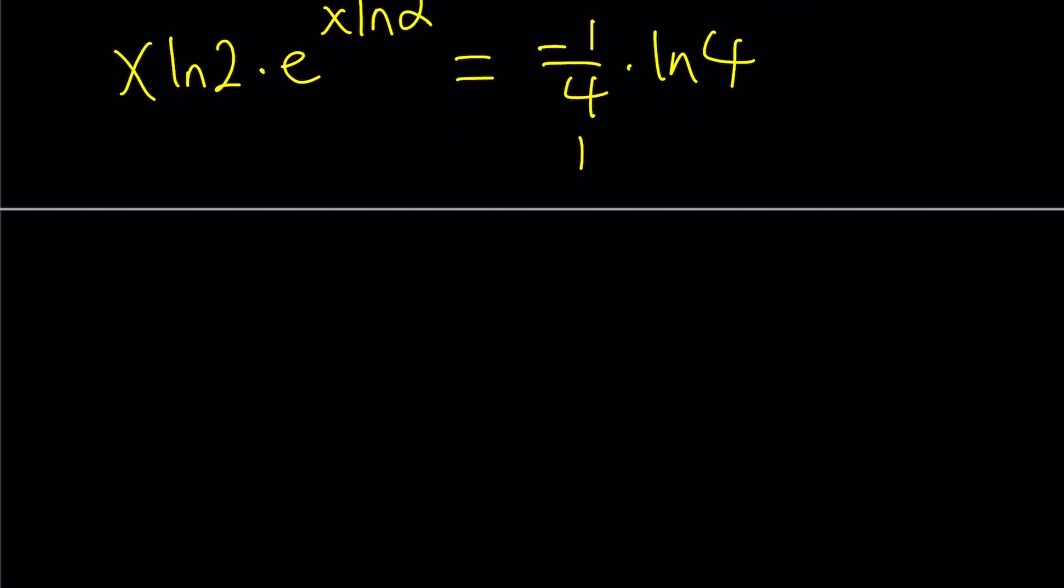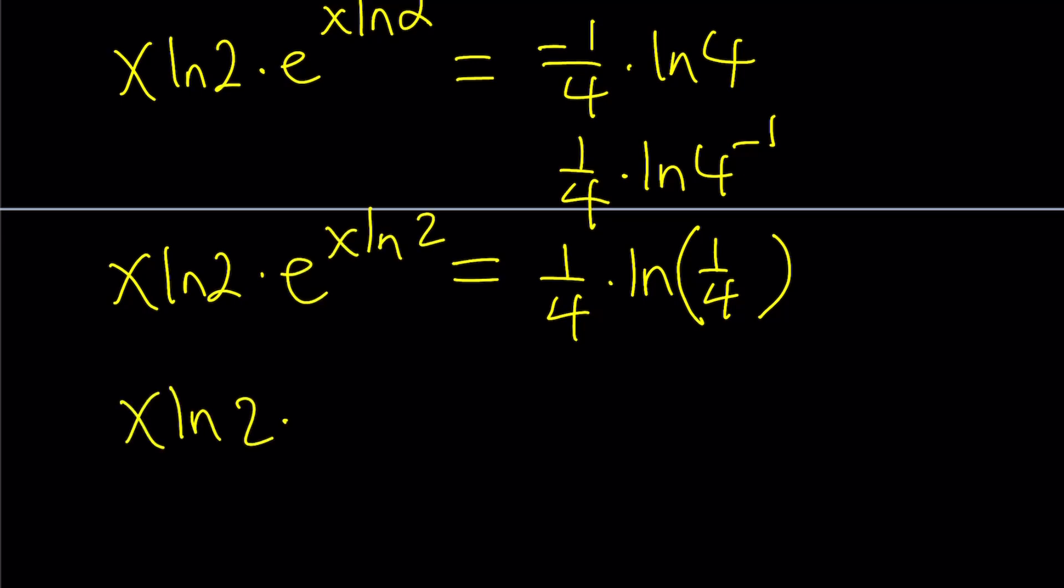So negative 1 fourth, we can do the following: 1 fourth times ln 4 to the power of negative 1, which is 1 fourth times ln 1 over 4, and it's all good. After the e to the ln thing.